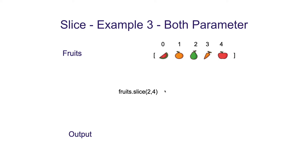In example 3, we are going to use slice with 2 parameters. We have the same input array with 5 fruits and we are calling slice with parameters 2 and 4. This means we are going to start our subarray at index 2 and end at 4, where 4 is not included. The output contains only the elements at position 2 and position 3.